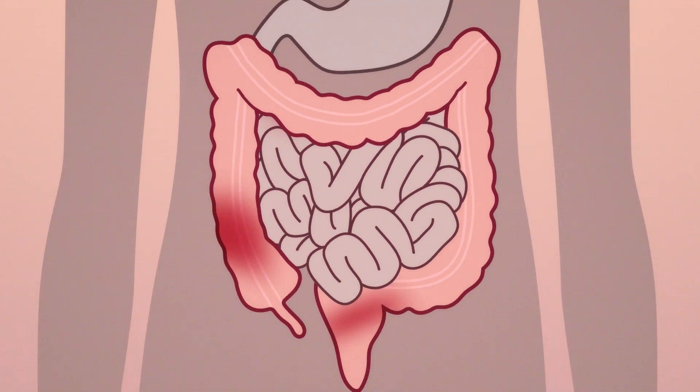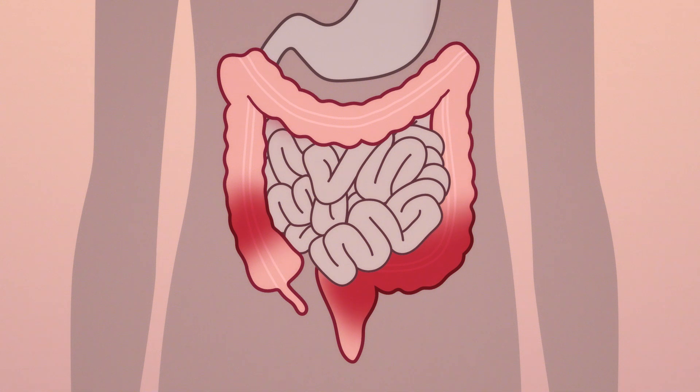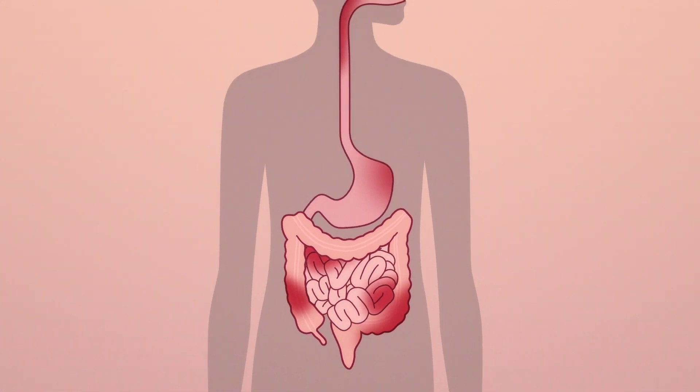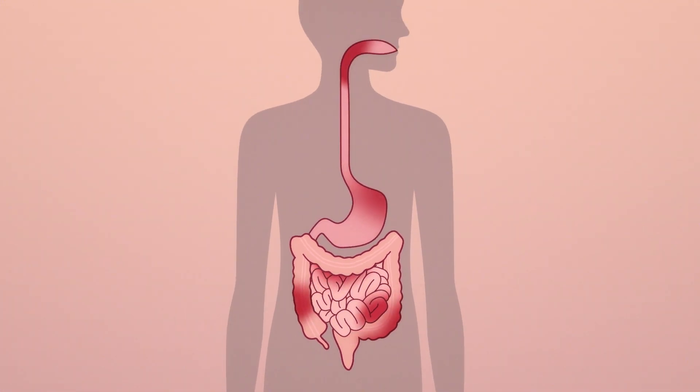At times, the intestines become swollen and sore, impairing their ability to absorb nutrients and fluids. There are different types of conditions. In ulcerative colitis, it is the rectum and colon that are affected. And with Crohn's disease, the inflammation can occur anywhere along the gastrointestinal tract.